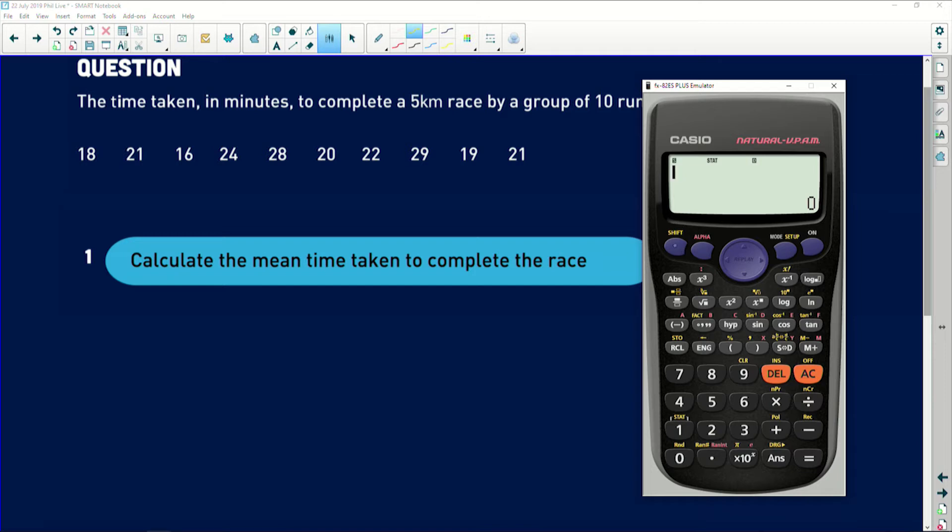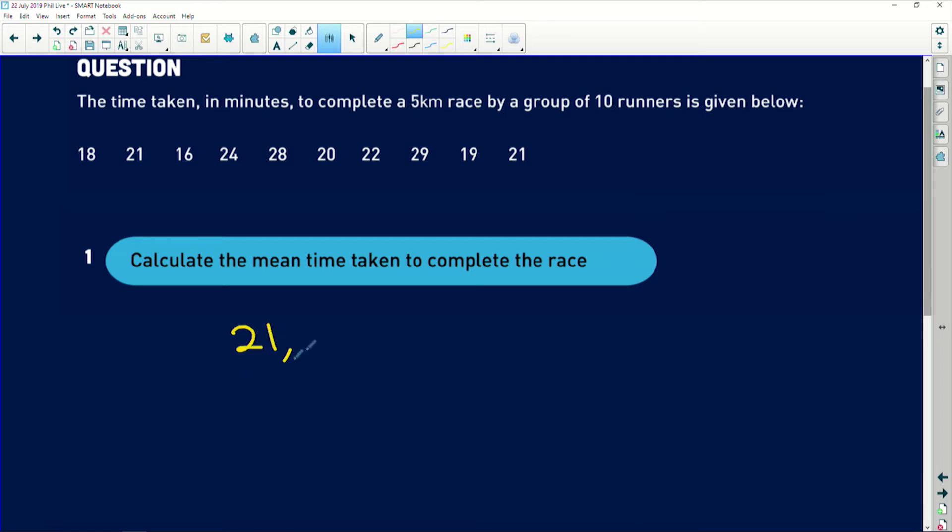Thereafter, you press Shift, 1 for stats. And now because we're looking for the mean time, mean is a type of variance, remember? So we press 4 for variance. And mean is given to us by this X bar. So you would press 2 and equals. And it calculates the mean for you. It's 21.8 minutes. And that is the average time these 10 runners took to run this race.